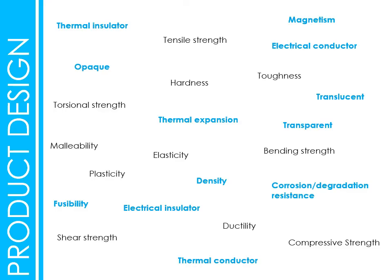In the exam, it's going to be really important that you can talk about these properties with confidence. For example, if you're given a question about low carbon steel, you need to talk about how it's a malleable metal, meaning it can be press formed and is easy to shape and work with. Make sure you revise these and have examples of materials that are good examples of each property.